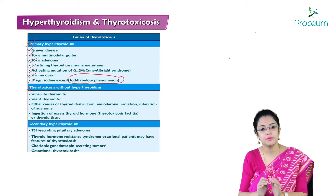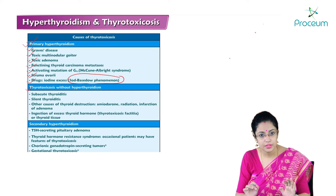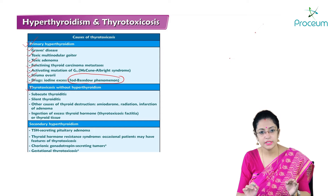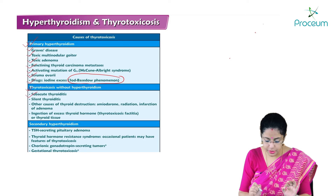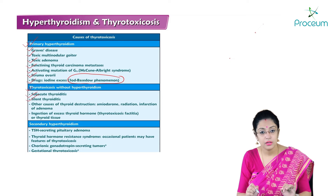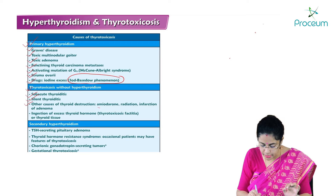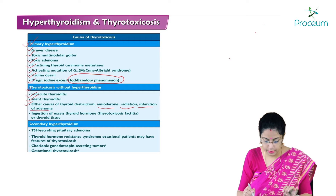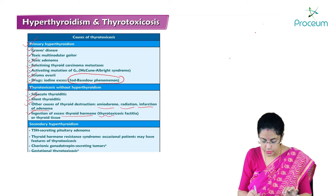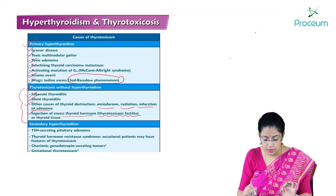Thyrotoxicosis without hyperthyroidism: thyrotoxicosis is a state of thyroid hormone excess in the blood. Thyrotoxicosis may not always be due to hyperthyroidism. Conditions where a patient has thyrotoxicosis but no hyperthyroidism include subacute thyroiditis, silent thyroiditis (usually seen in postpartum cases), thyroid destruction due to amiodarone, radiation-related destruction, infarction of thyroid adenoma, ingestion of excess thyroid hormone (thyrotoxicosis factitia), or ingestion of thyroid tissue.